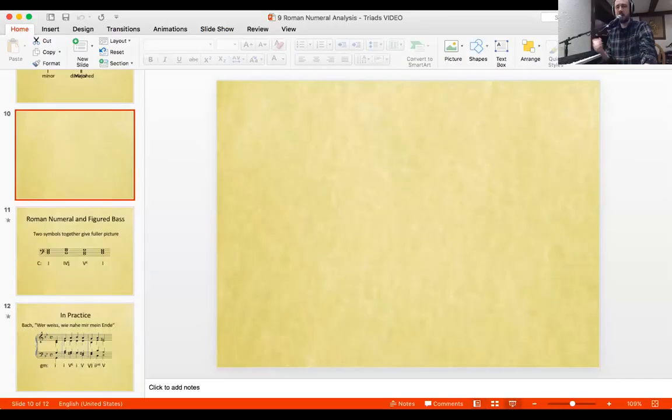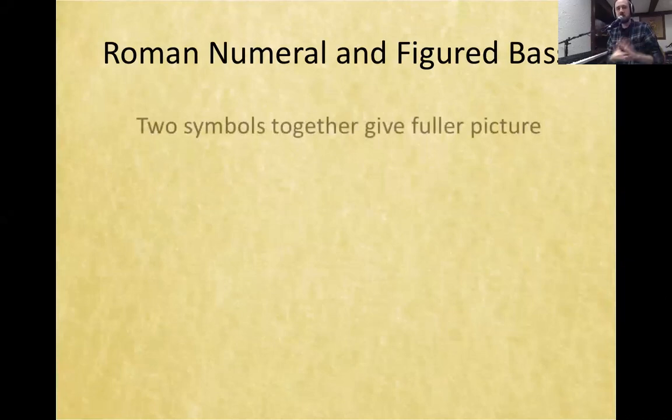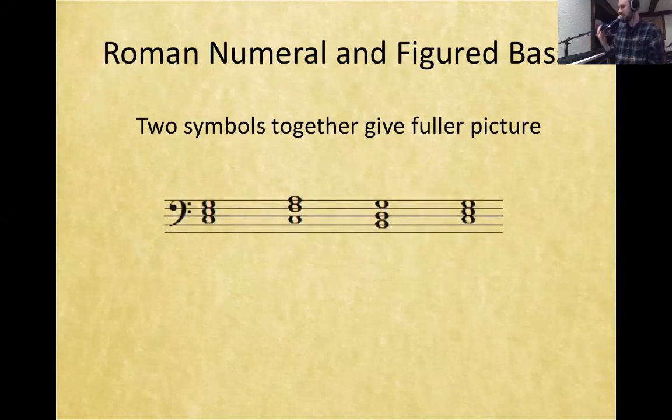Now that we've got a good feel for how we're going to find the various triads in different keys, and we have a really good look at the figured bass inversion symbols, we can start to put these together to give ourselves a really complete view of the different chords. Taking these two symbols and combining them will give us an extremely large amount of information in a really efficient package. We've looked at Roman numerals, we've looked at figured bass symbols — time to put them together.